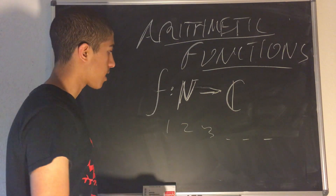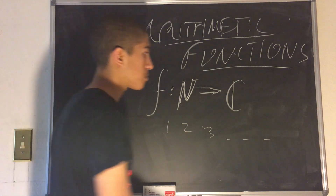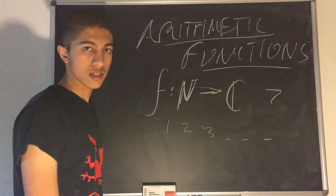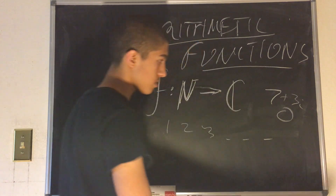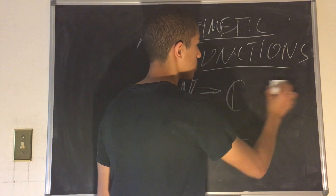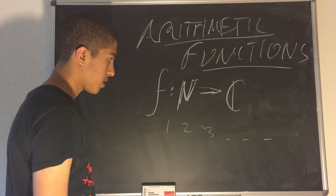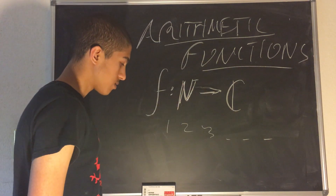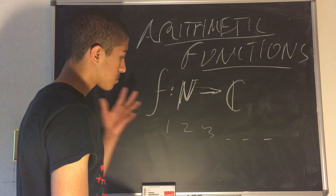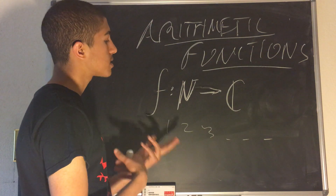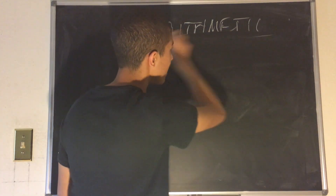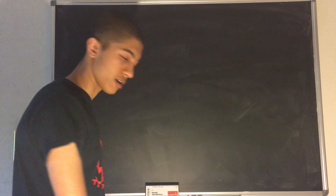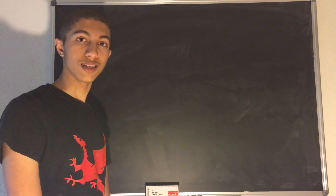Complex doesn't necessarily mean that it has to be imaginary. For example, the number 7 is a complex number. The number 7 + 3i is also a complex number. The number 0 is also a complex number. So complex numbers do not necessarily need to have imaginary parts. So an arithmetic function is any function which takes the positive integers and spits out some complex number. Now let's discuss some important arithmetic functions, and often the important ones deal with divisors of a certain number.